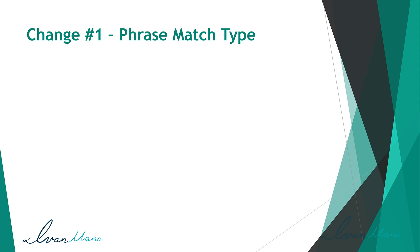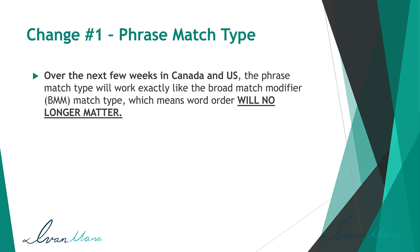Now let's go through the actual changes. The first change revolves around the phrase match type. Over the next few weeks in Canada and the US, the phrase match type will work exactly like the broad match modifier type, which means that the order of the words in the phrase match type will no longer matter. The only difference between the broad match modifier and the phrase match type was that in a phrase match type, the order of the words mattered. With this change, there's no longer a need to even create broad match modifier keywords, because this will all become just a phrase match type.